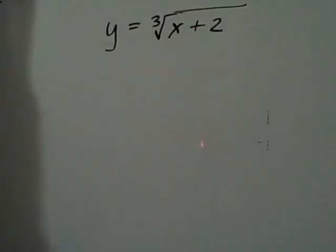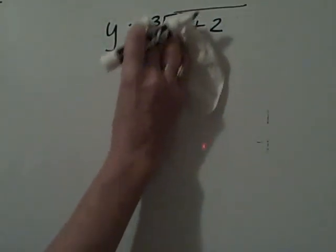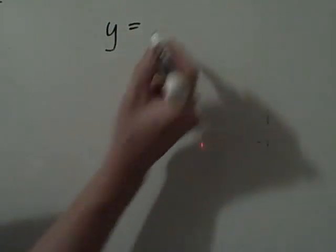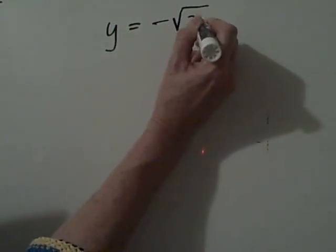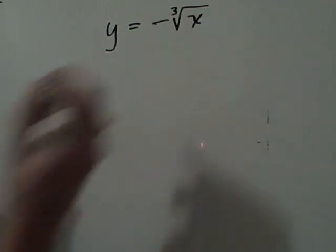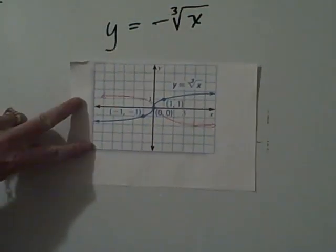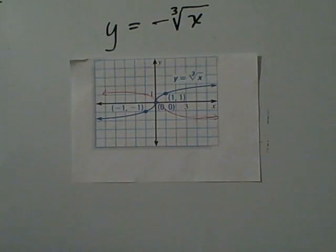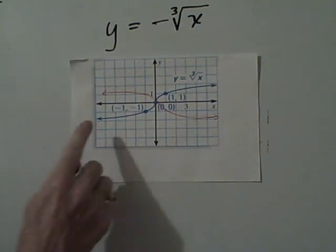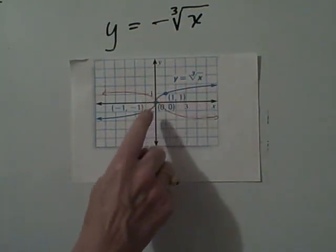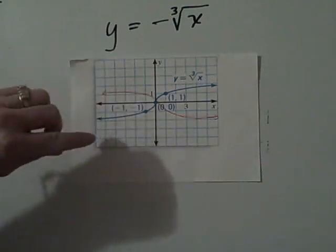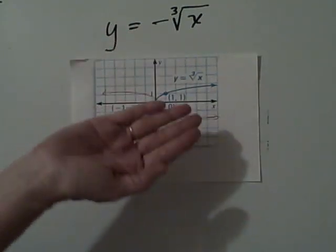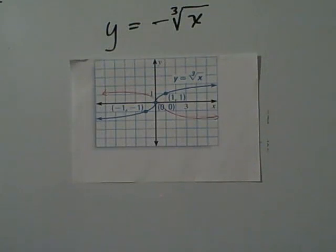Finally, what happens if we put a negative in front of our cubic root? Negative cubic root of x. That graph is going to look like this red graph. Notice it's the exact same as the blue graph except it has been flipped because the negative indicates that you're flipping it over the x-axis.